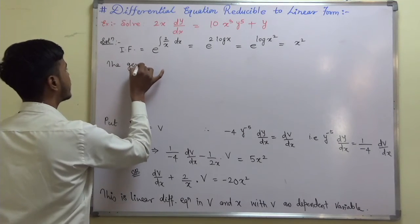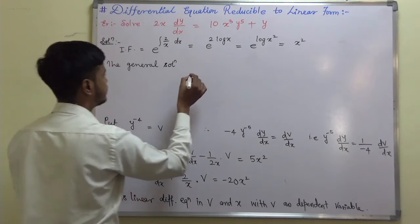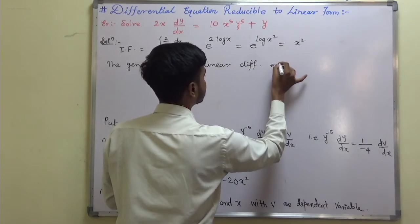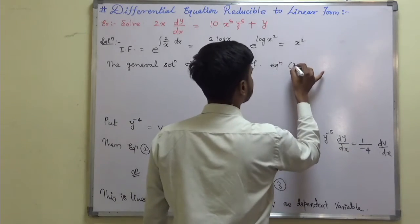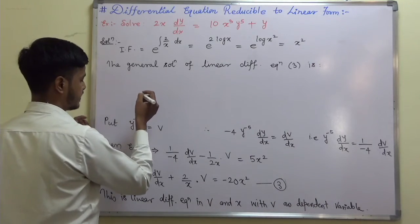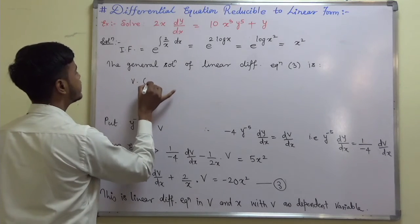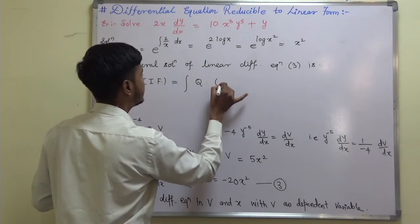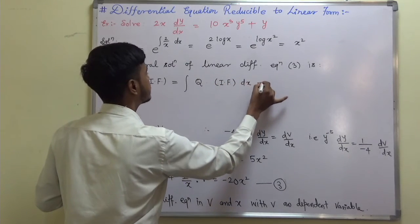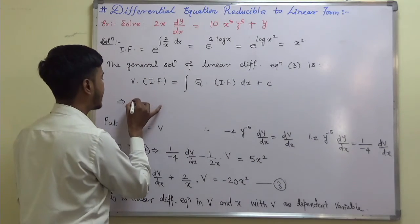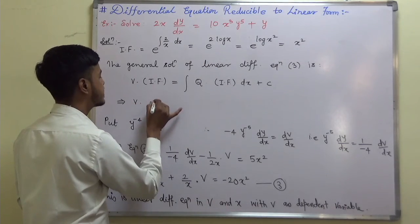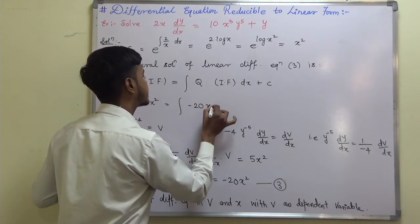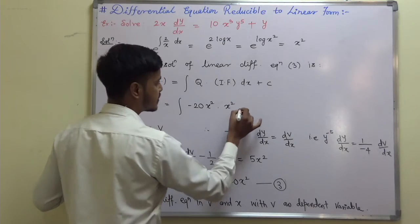The general solution of the linear differential equation is: dependent variable times integrating factor equals the integral of Q times the integrating factor plus a constant. So v·x² = ∫(−20x²)·x² dx + c = ∫−20x⁴ dx + c.